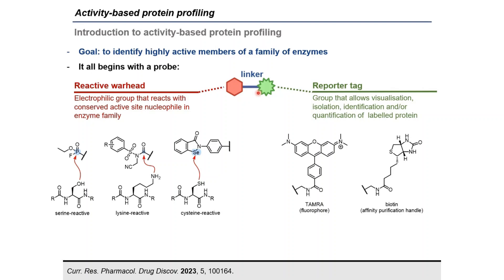The linker connects the reactive warhead with the reporter tag. The reporter tag is a group that allows visualization, isolation, identification, and/or quantification of labeled proteins. The reactive warhead reacts with a nucleophile in the enzyme family, and the reporter tag allows us to study the labeled proteins. There are two main classes of reporter tags: fluorophores, which allow us to identify and see what proteins have been labeled, and biotin-based tags, which allow us to separate the labeled proteins from the rest of the proteome.